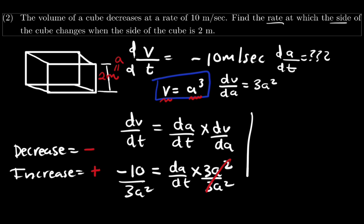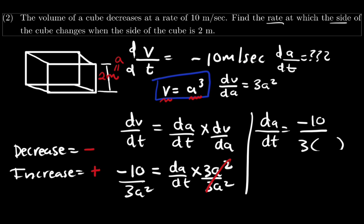Dividing both sides, we substitute A with 2: dA over dt equals negative 10 divided by 3 times 2 squared. Finally, dA over dt equals negative 5 over 6 meters per second.